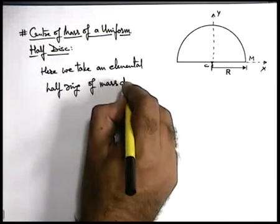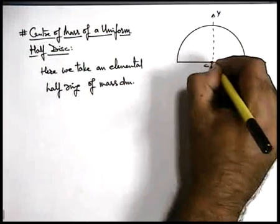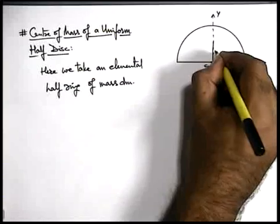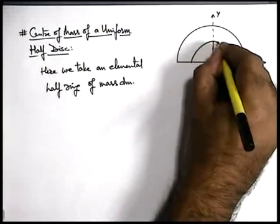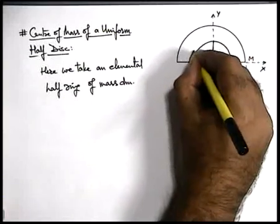Of mass dm. So at a height y, we consider an elemental ring of width dy.